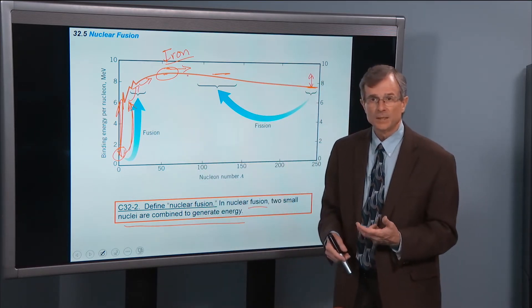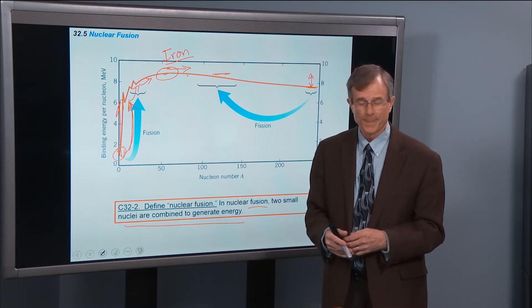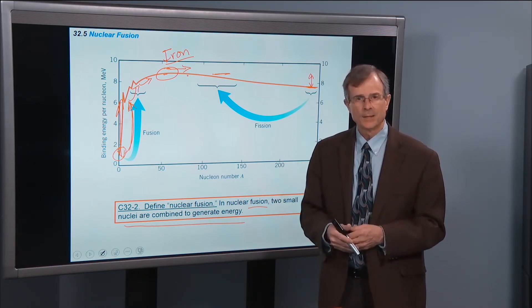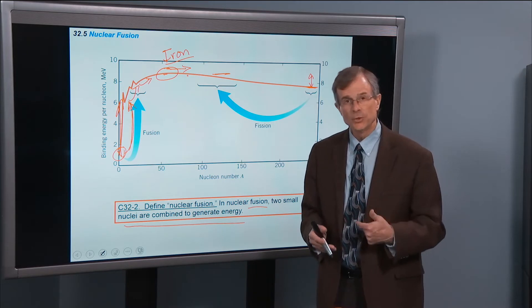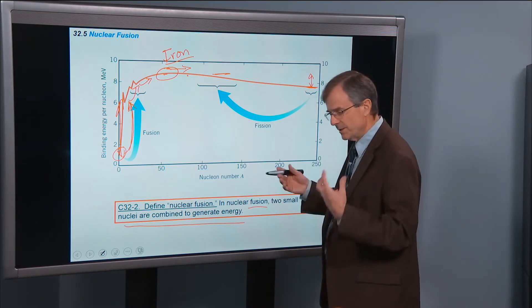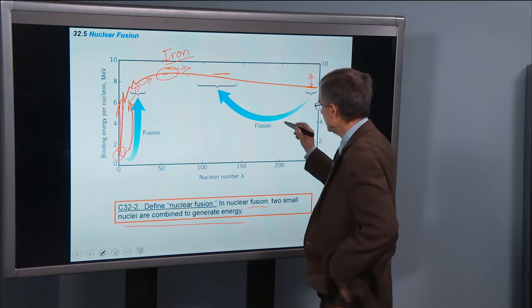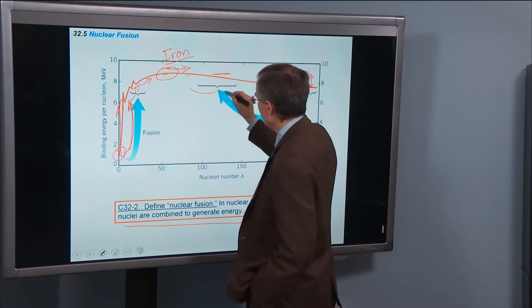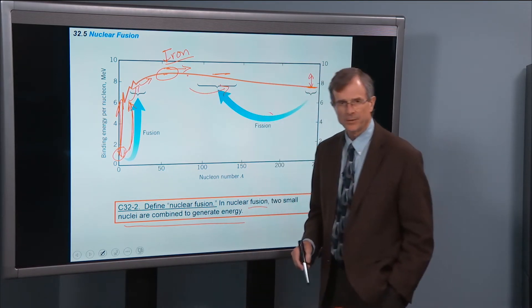And what happens then is called a supernova explosion, where the whole star tears itself apart. During that explosion, there is enough energy to go around to create some of these heavier elements. Zinc and other elements in your body.